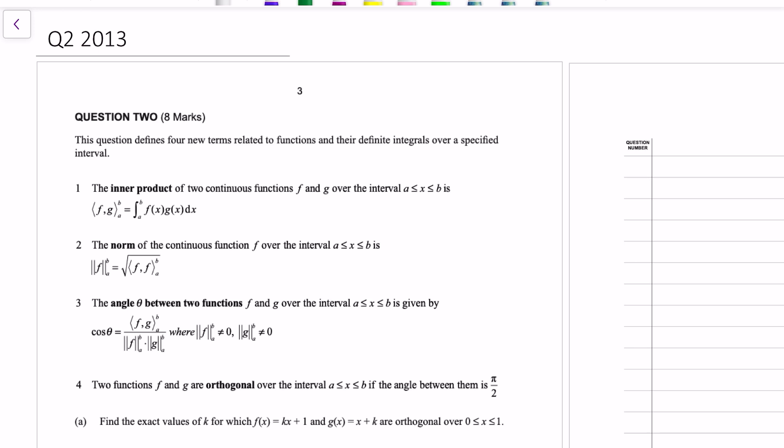Part A. Two functions - we've got a linear, they're both linear functions. f of x equals kx plus 1 and g of x equals x plus k. Find the exact values of k for which these two functions are orthogonal over an interval from 0 to 1. So I remember when I first got exposed to this maths at university, I was thinking of orthogonal as right angles.